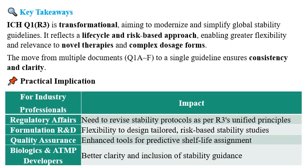The ICH Q1R3 is a transformational guideline aiming to modernize and simplify the global stability guidelines. It reflects a lifecycle and risk-based approach for stability studies, enabling greater flexibility and relevance to novel therapies, complex formulations, and process forms. The move from multiple documents — Q1A to Q1F — to a single guideline ensures consistency and clarity.